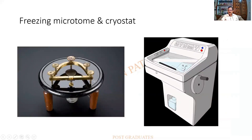These older freezing microtome designs are now of antique value, since we have the cryostat. The cryostat will be dealt with in detail at a later class. To summarize, the types of microtomes covered were: the rocking microtome, the rotary microtome, the sledge microtome, the base sledge microtome, and the freezing microtome.